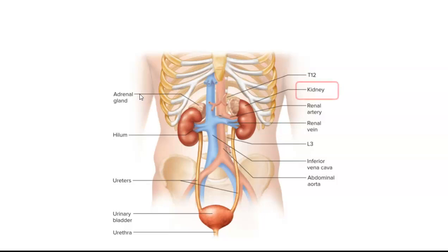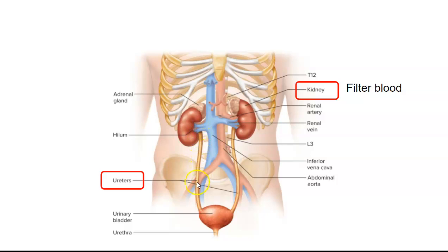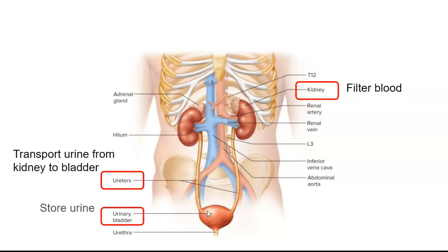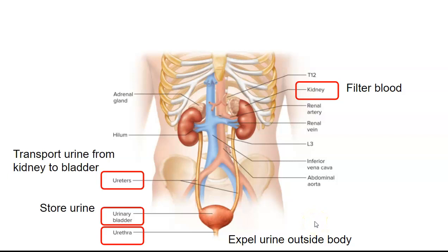Let's look at some of the major organs in the urinary system. We have the kidney, which filters blood and ultimately produces urine. We have ureters — a tube that allows urine to travel from the kidneys to the bladder. Then we have the urinary bladder, where urine is stored, and lastly the urethra, which expels urine outside the body. Let's also look at the renal artery and renal vein. Blood is pumped into the kidney through the renal artery, and blood leaves the kidney through the renal vein.